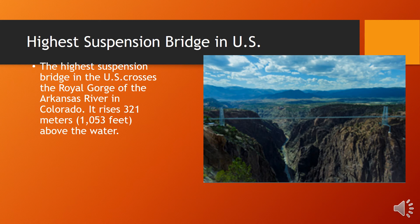The highest suspension bridge in the U.S. crosses the Royal Gorge of the Arkansas River in Colorado. It rises 321 meters or 1,053 feet above the water.